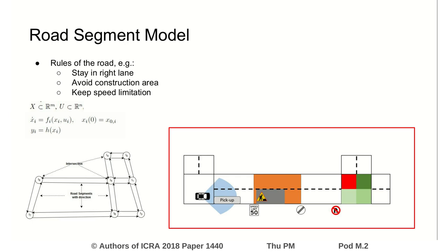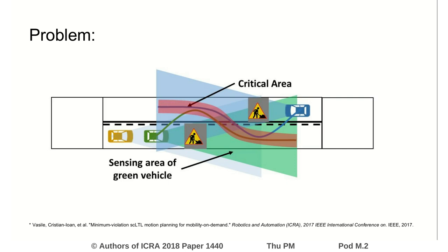Here we consider the motion planning problem that occurs when several vehicles prevent each other from following their route optimally. This means that in our hierarchical model we focus on the multi-vehicle motion planning problem in the road segments, with the aim to reach a compromise leading to social optimum.